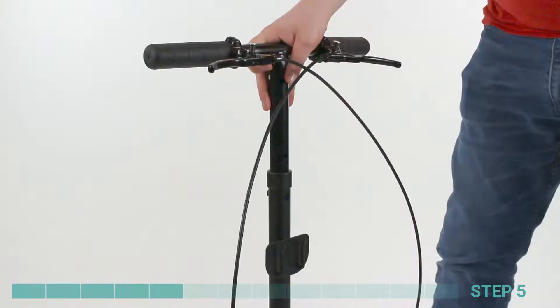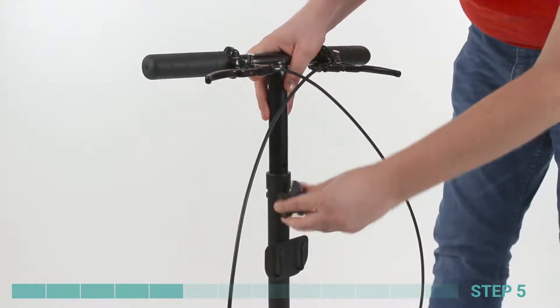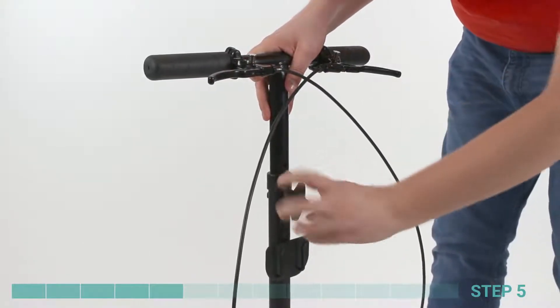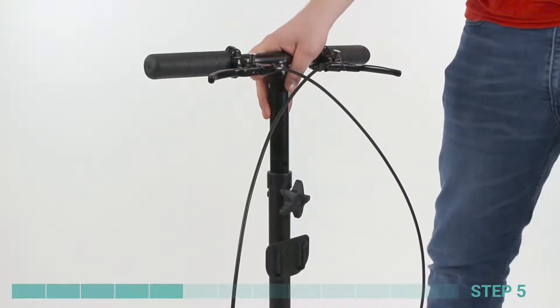Step 5. Adjust the handlebars to your desired height. The hole in the steering column should line up with the desired hole on the handlebar pole. Insert the adjustment knob back into the hole at the top of the steering column and tighten.